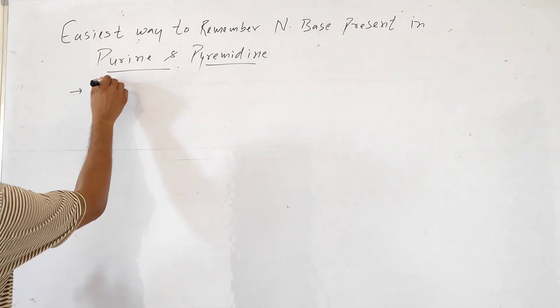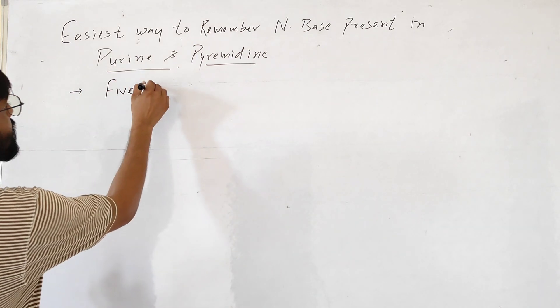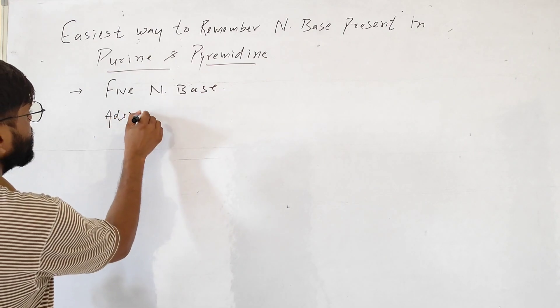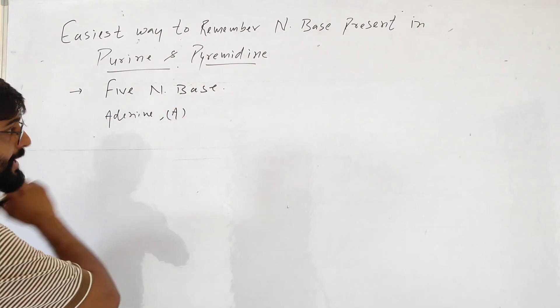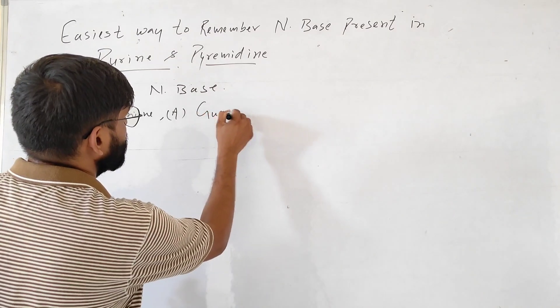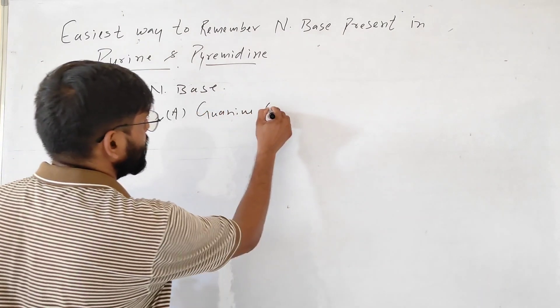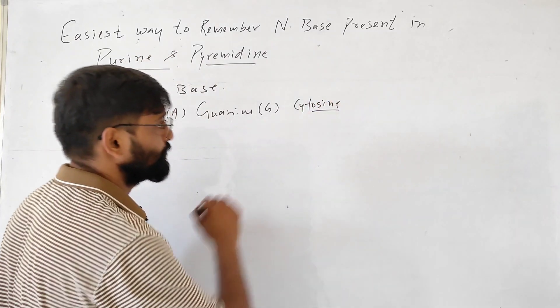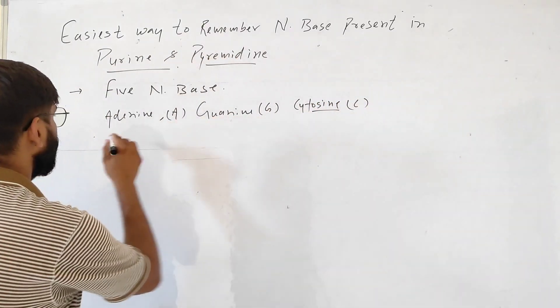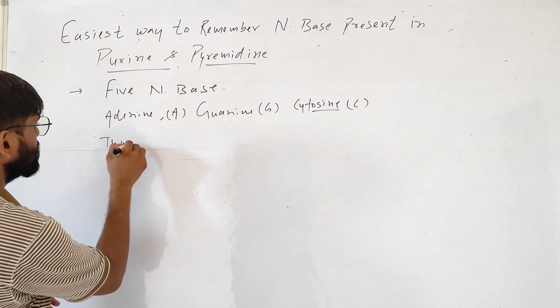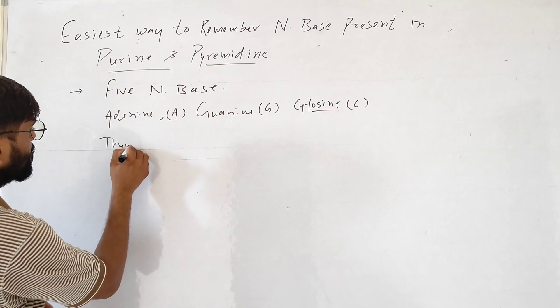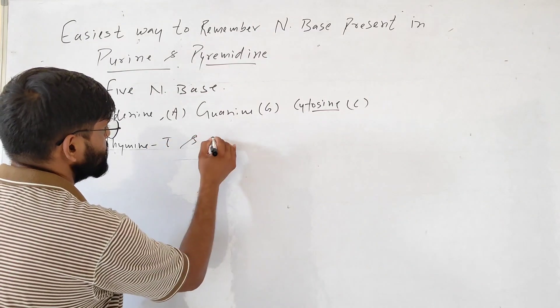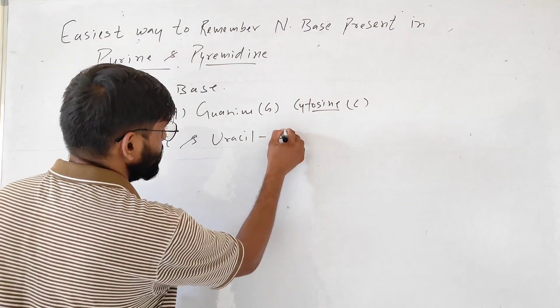We know that there are total 5 nitrogenous bases. That is adenine represented by A, guanine represented by G, cytosine represented by C, thymine represented by T, and last one is uracil represented by U.